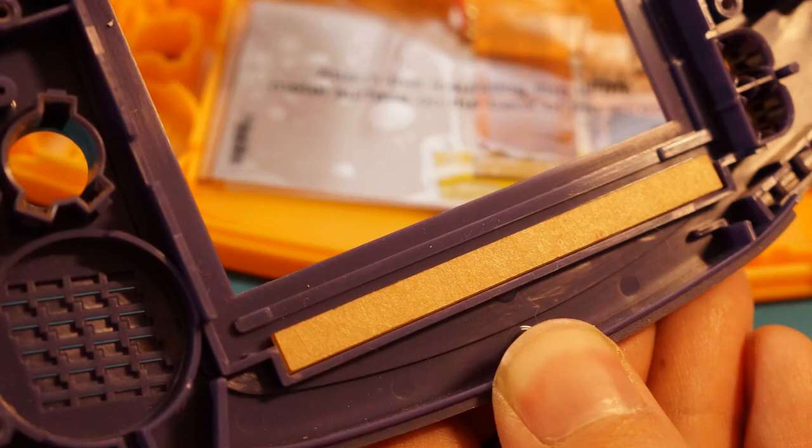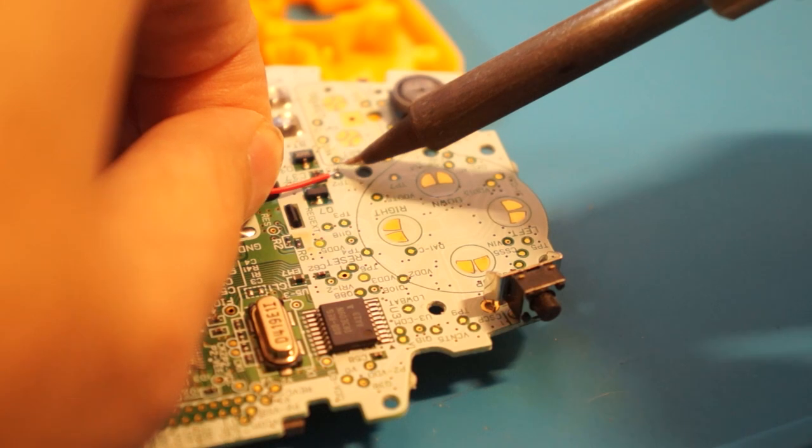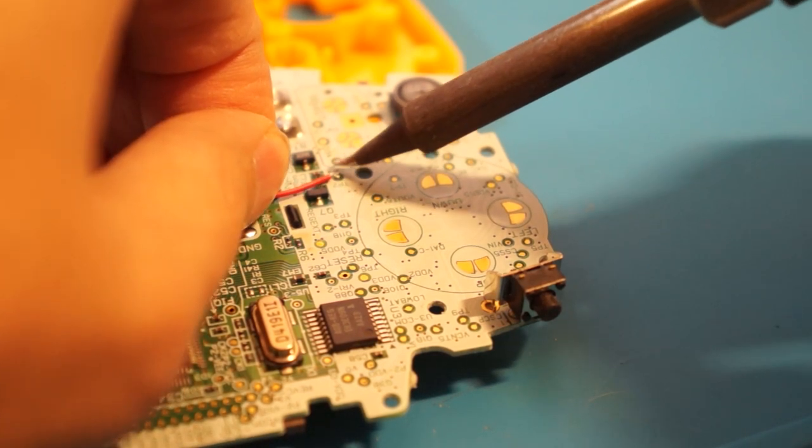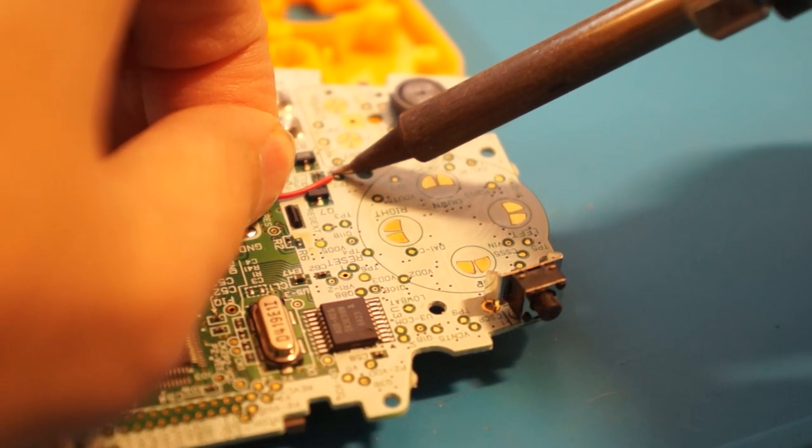If you're using an original shell or an untrimmed shell and you're performing the trim yourself, use the larger spacer at the lower portion of the display cutout as shown. At this time, go ahead and solder the select wire to the test point labeled TP2, which we tinned earlier.